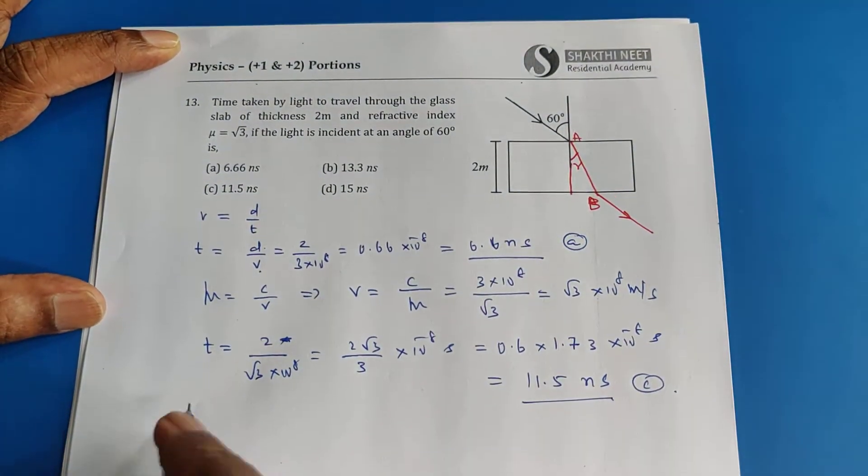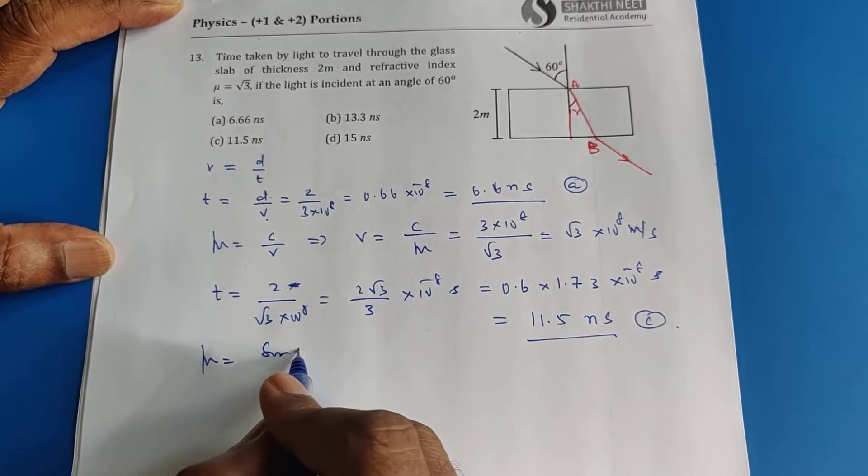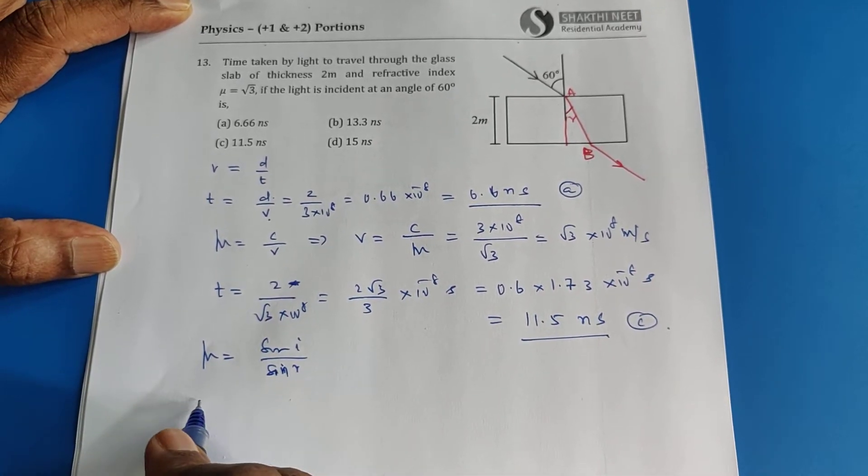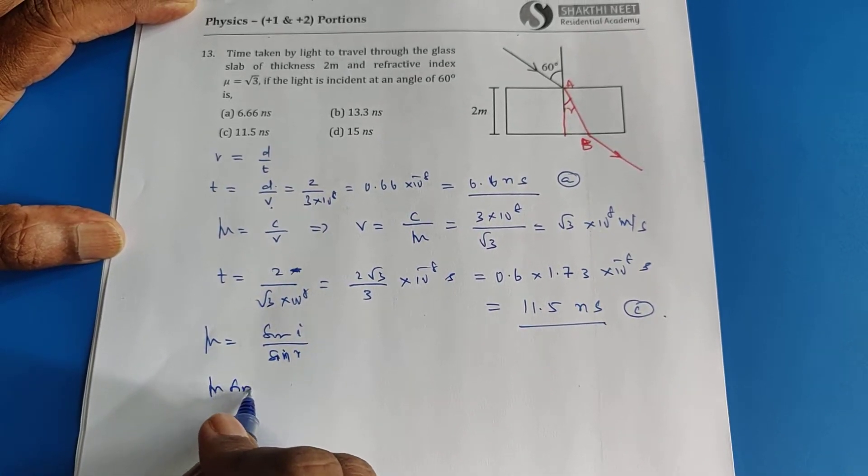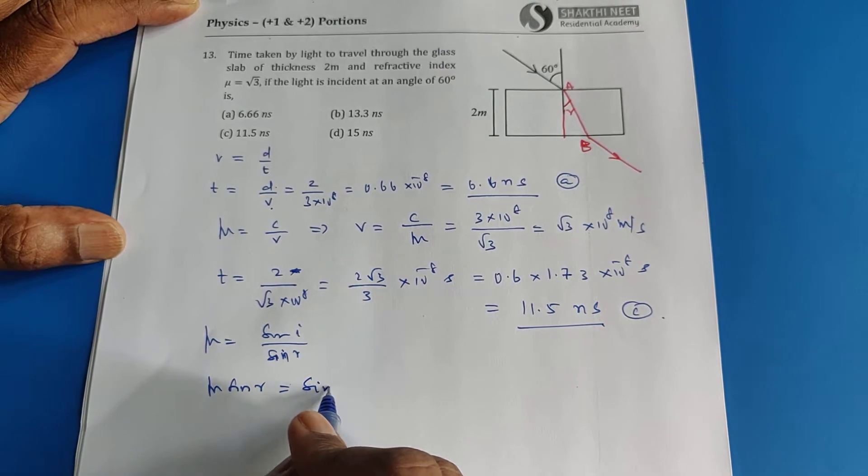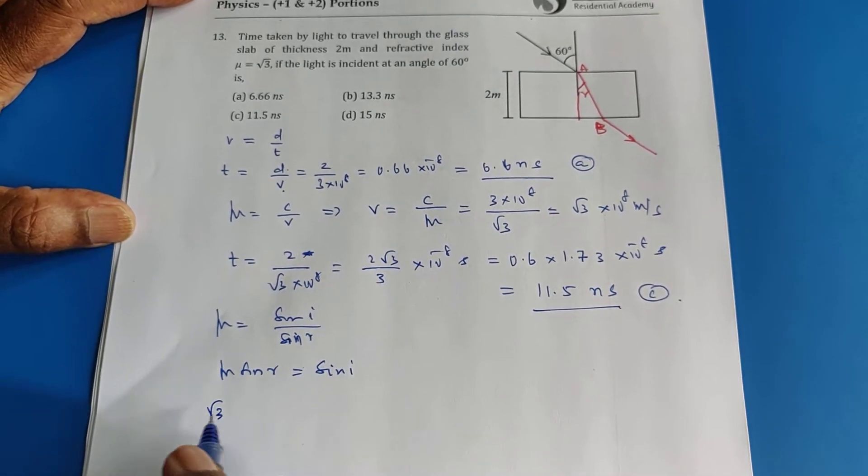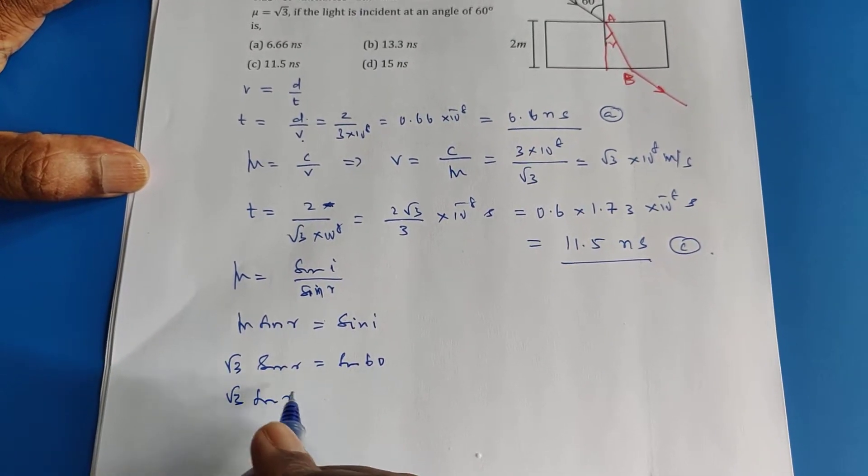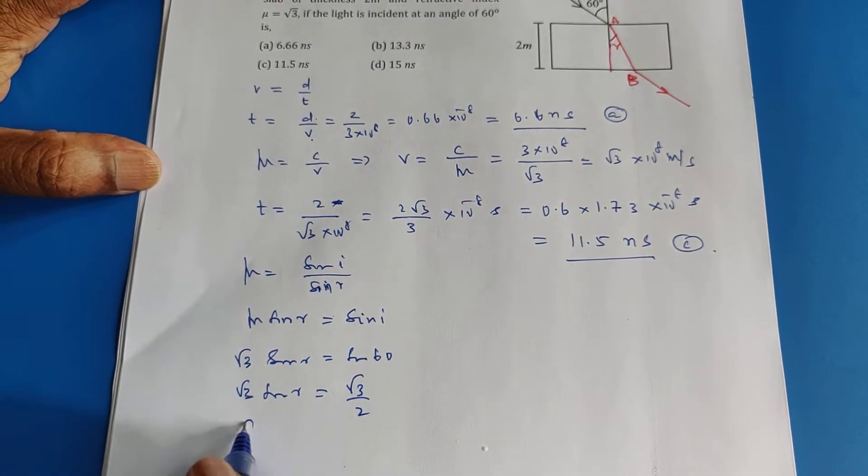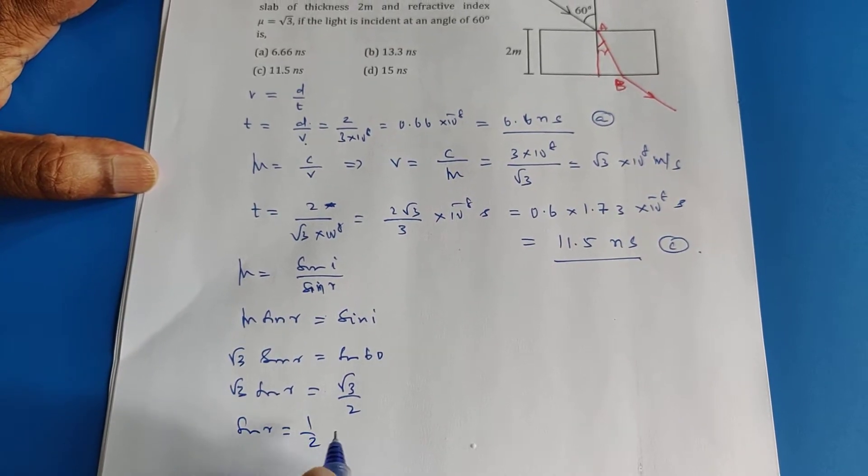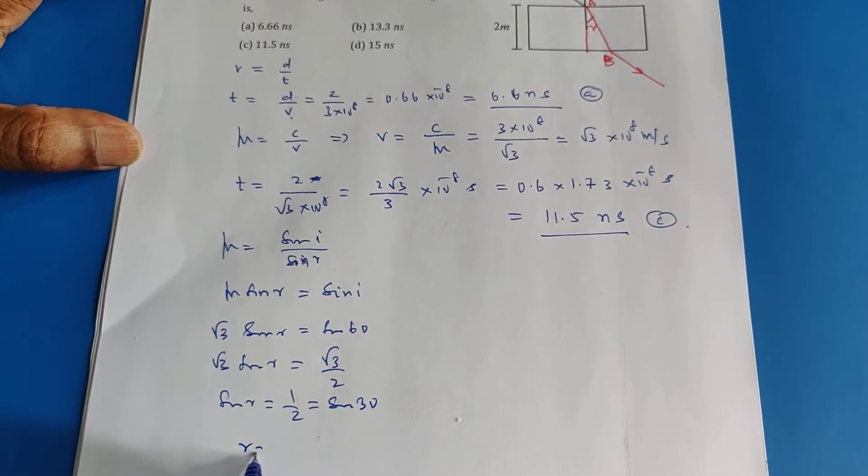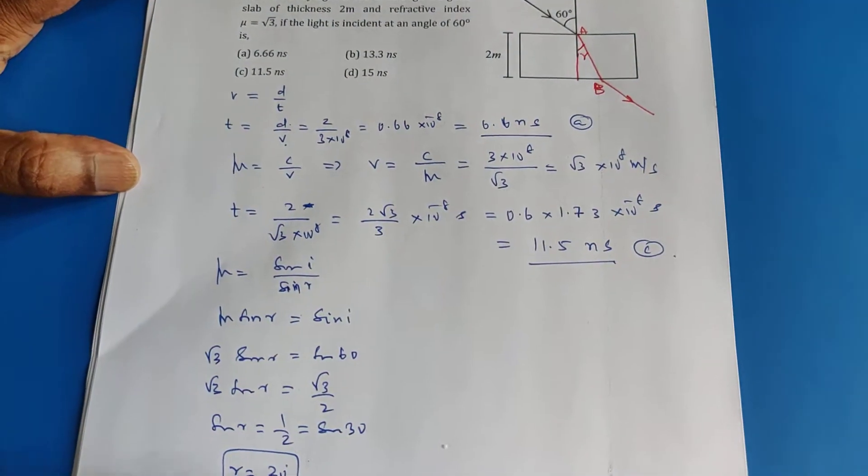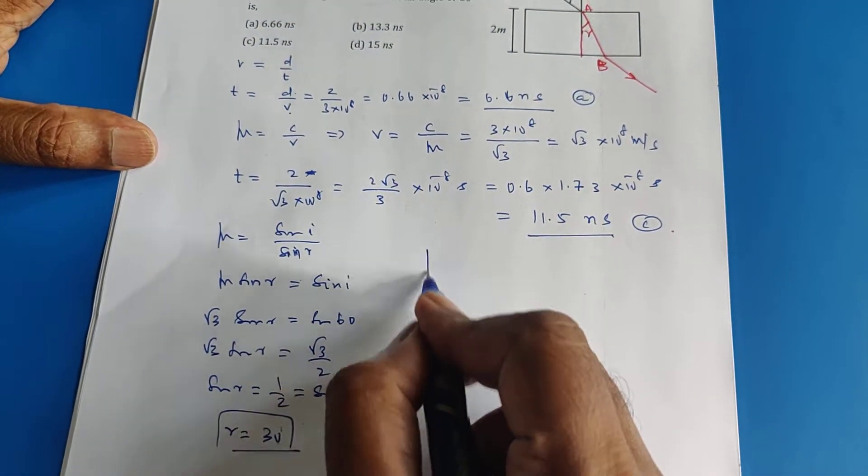For that, I should know what is the angle of refraction. First step, we have to find this. What is μ? Sin I by sin R, Snell's law. I bring sin R to this side. μ sin R equals sin I. What is given? μ is given. Angle of incidence is given. What is sin 60? Root 3 by 2. Therefore, how much is sin R? 1 by 2. 1 by 2 is sin 30. Therefore, R is equal to 30 degrees. So the angle of refraction you have got.